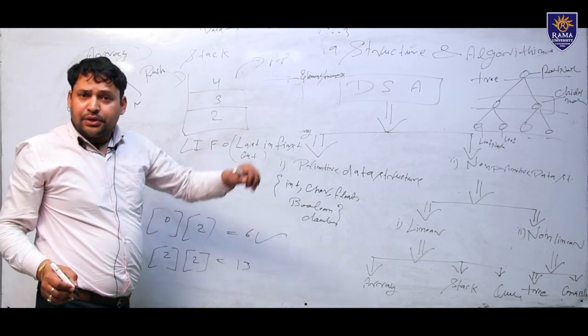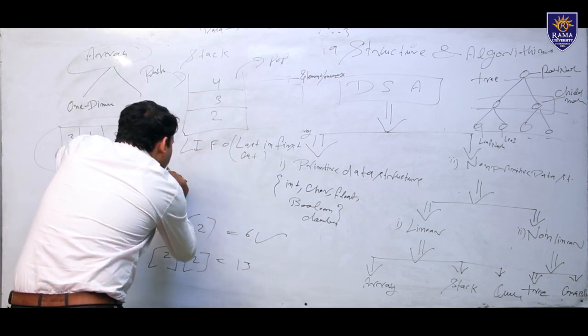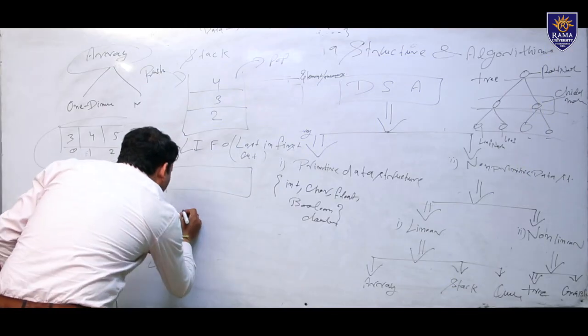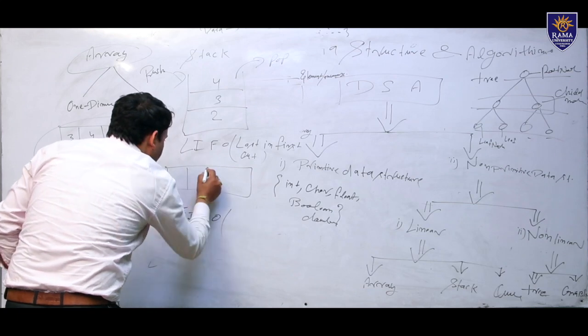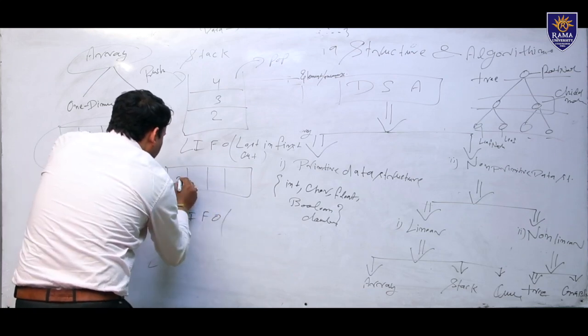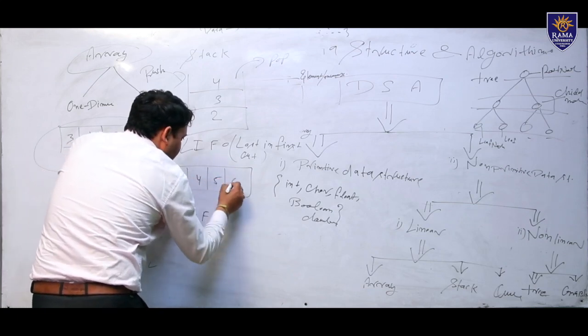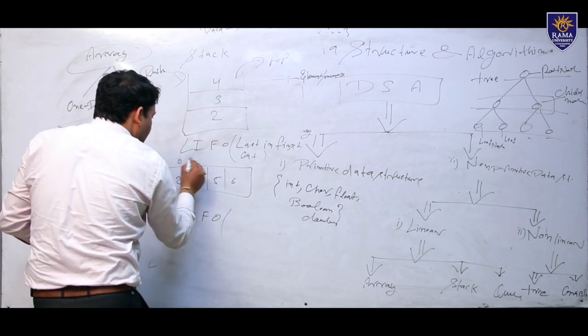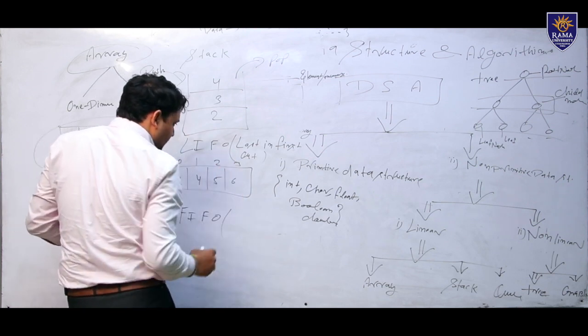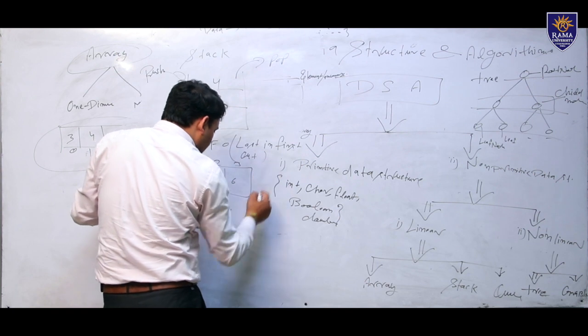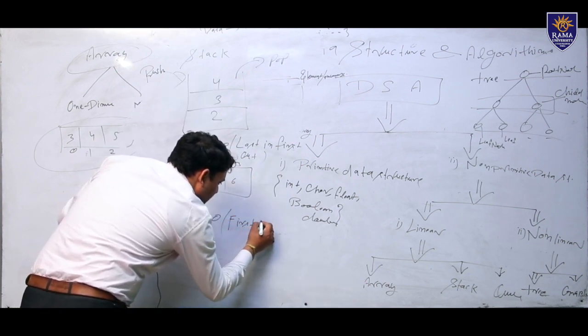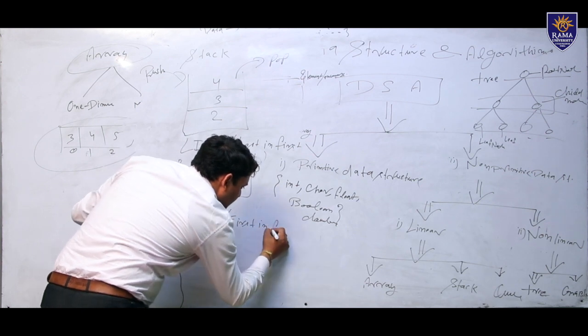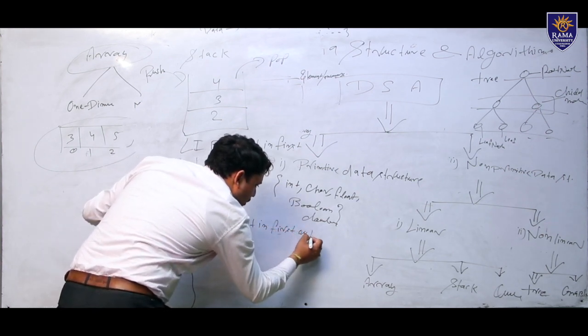Similarly, queue is FIFO. Here, elements 2, 4, 5, 6 with index 0, 1, 2, 3. First in, first out. It's the best example.